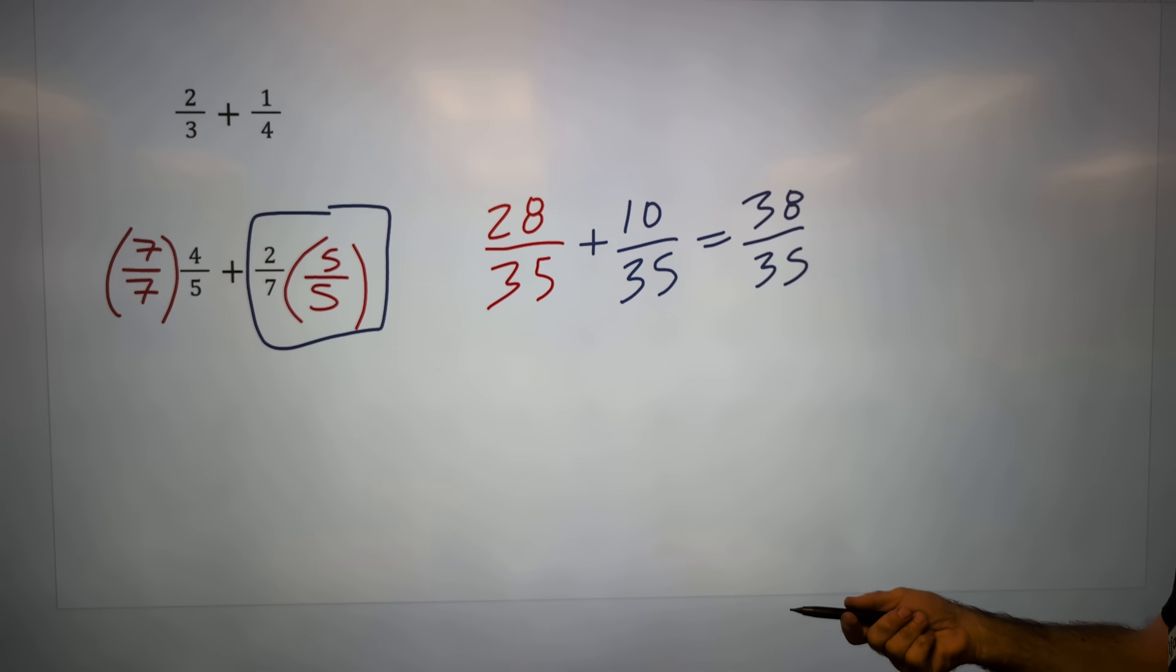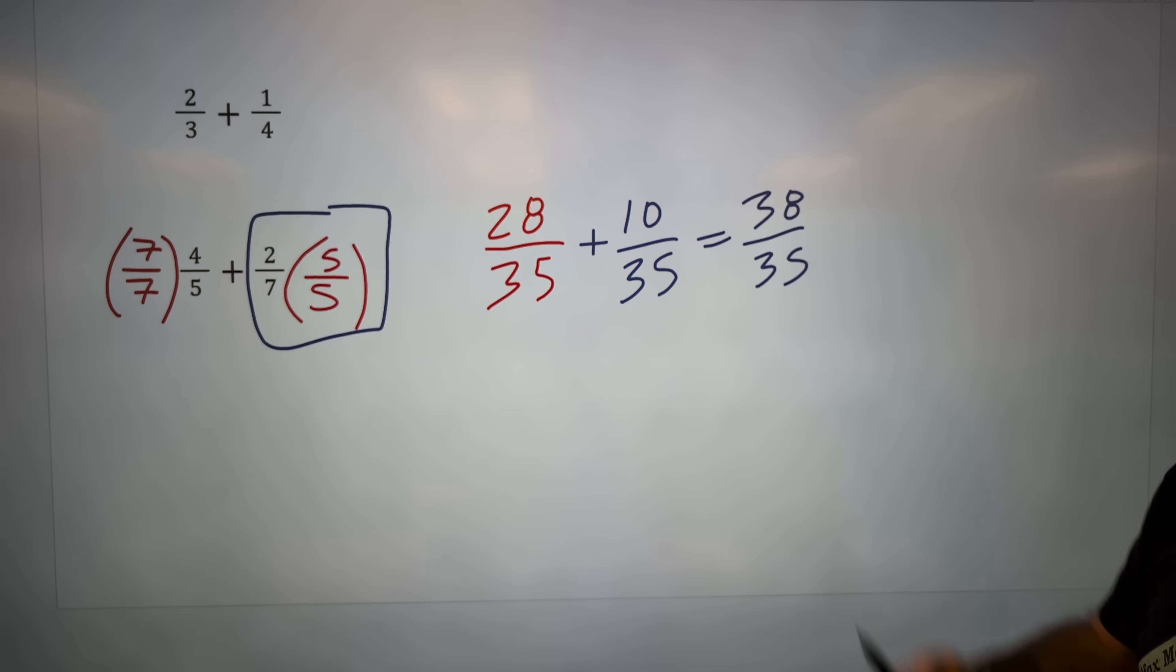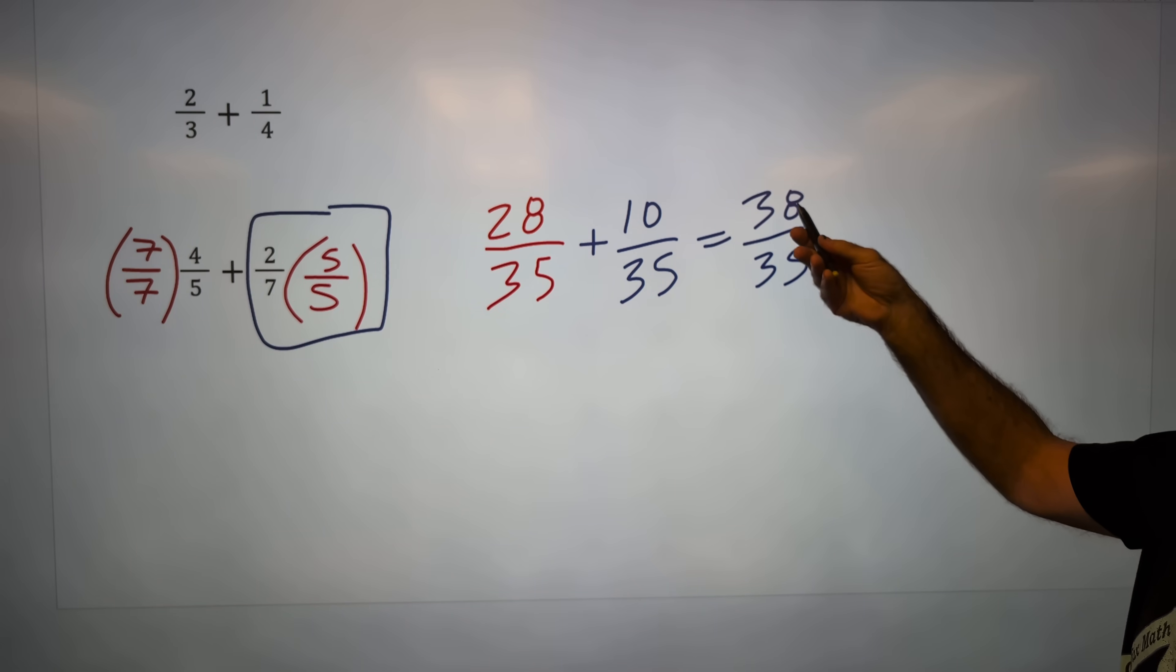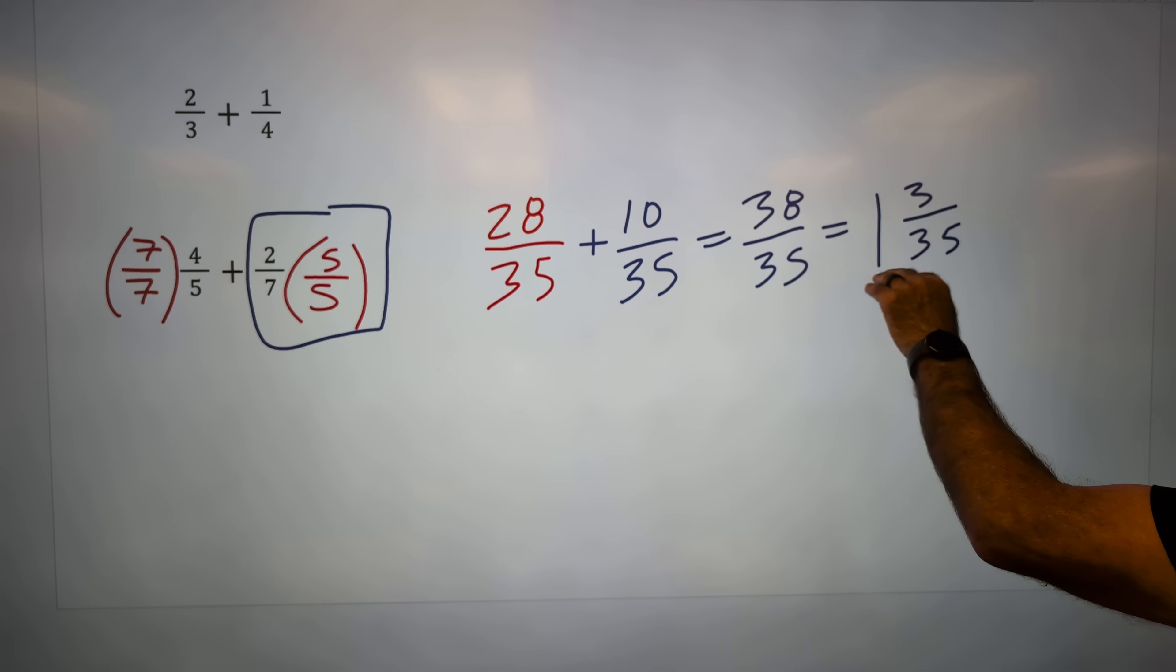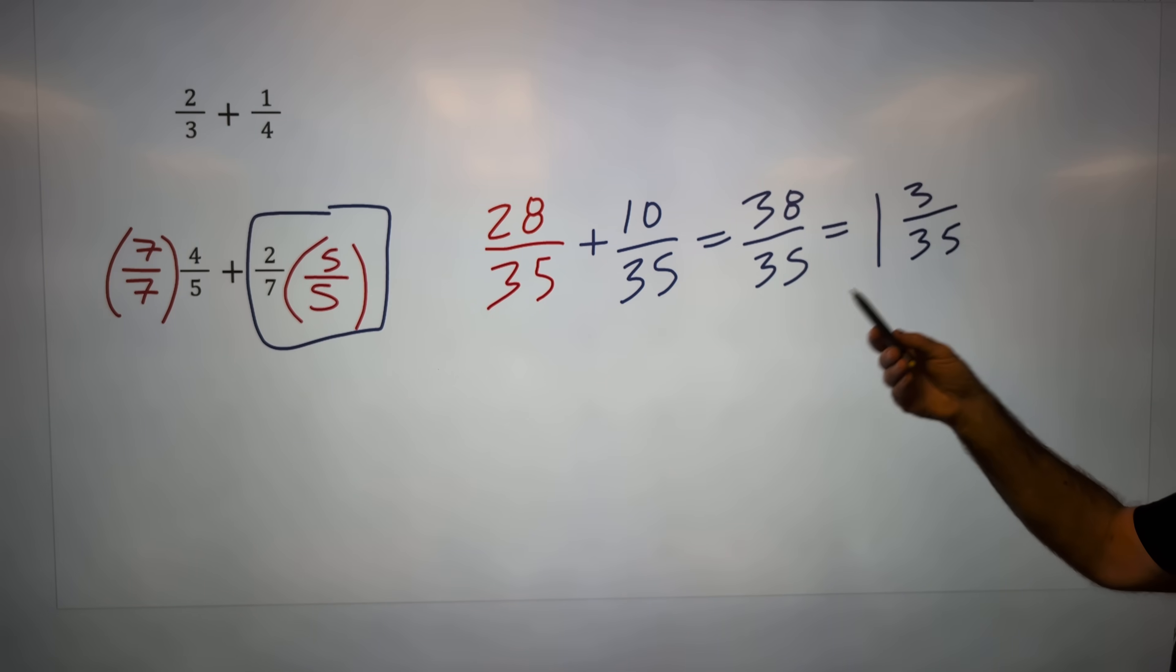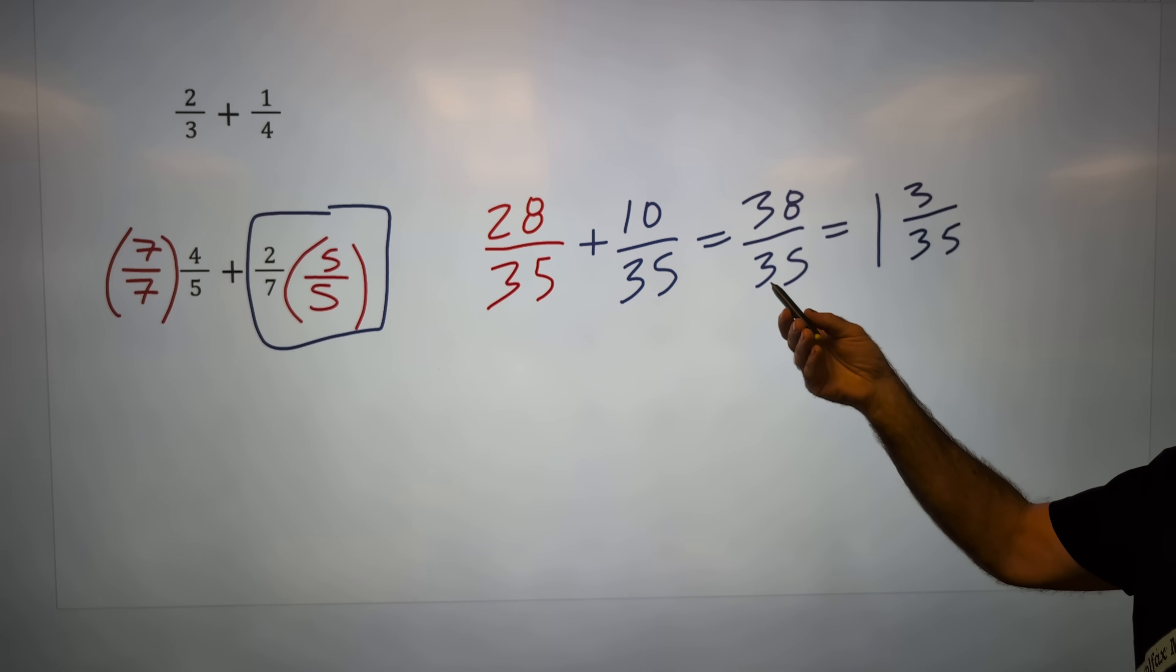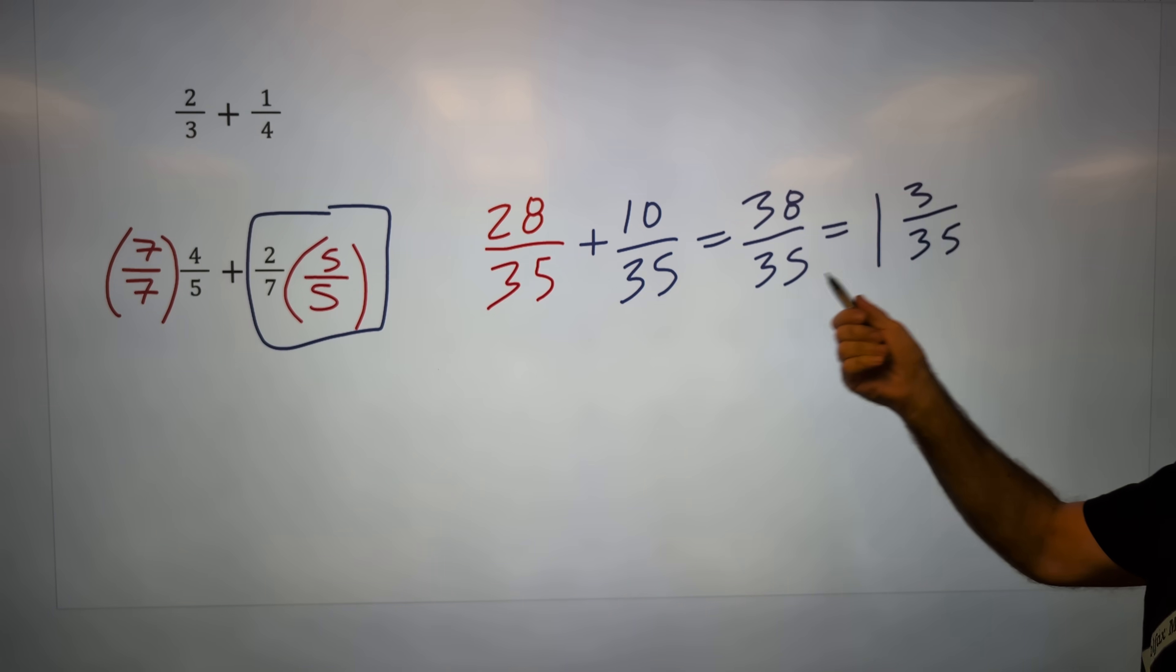Step four, simplify. This is called an improper fraction because the numerator is greater than the denominator. I'm going to turn it into a mixed number. 35 goes into 38 one time. Once 35 goes into 38, I have three left over. So it is one and three thirty-fifths. This and this are equivalent. They are both correct answers. You need to be able to go back and forth between the two because this might sometimes be the multiple choice answer or this one.